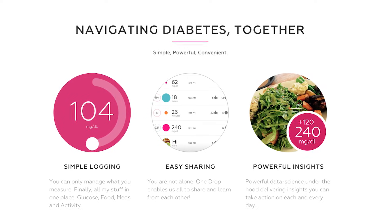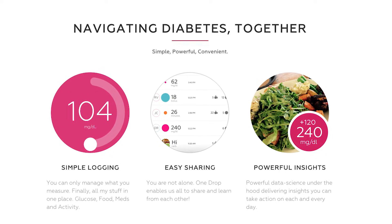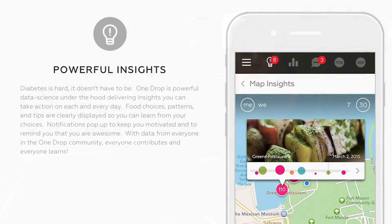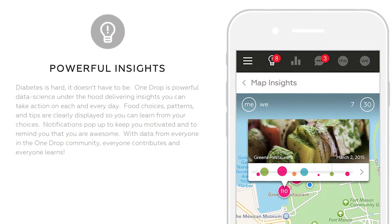The most interesting thing about One Drop is that it adds all four key elements — it lets you log food, medications, exercise, and your blood glucose levels, giving you a more thorough picture of what's going on with you. It also adds a social element so you can share and get information from other people as well as give them information. One Drop is available for free today in the App Store.